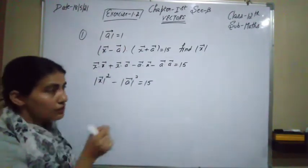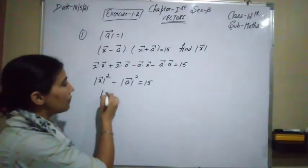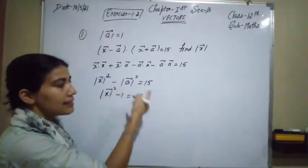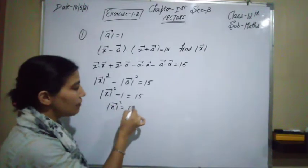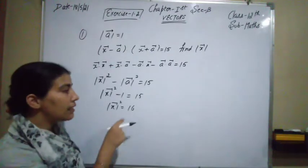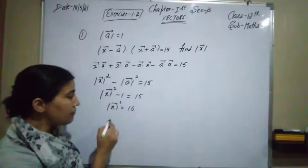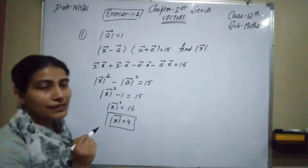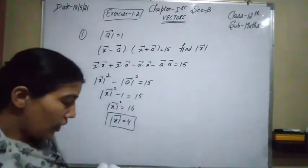Since a⃗ is a unit vector, |a⃗| = 1, so |a⃗|² = 1. The equation becomes |x⃗|² − 1 = 15, which gives |x⃗|² = 16. Taking the square root, |x⃗| = ±4, but since magnitude is always positive, the magnitude of x⃗ is 4.